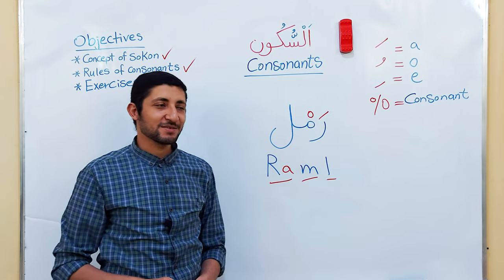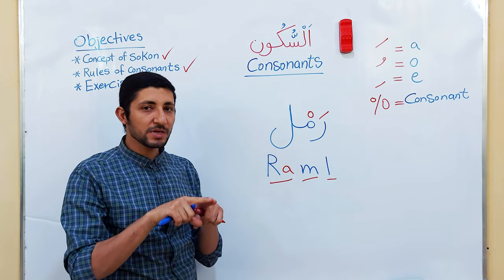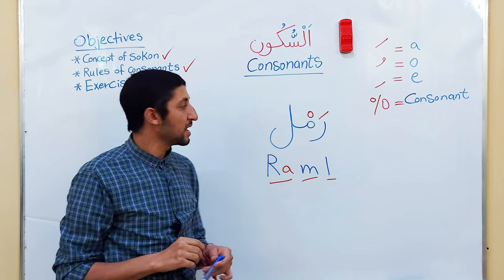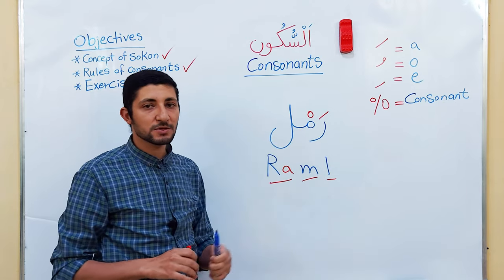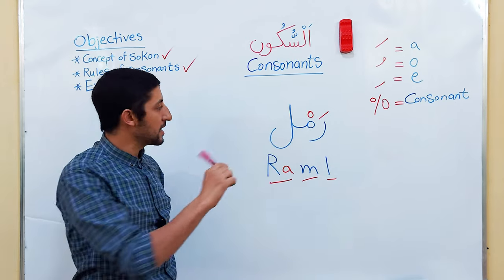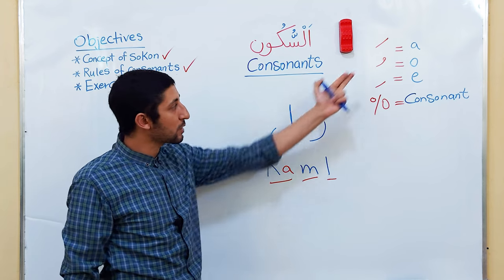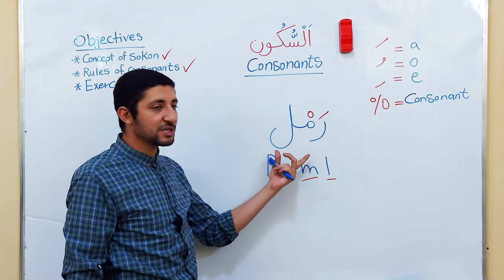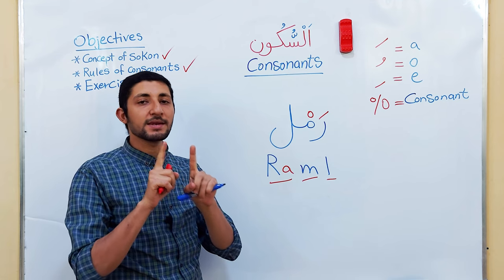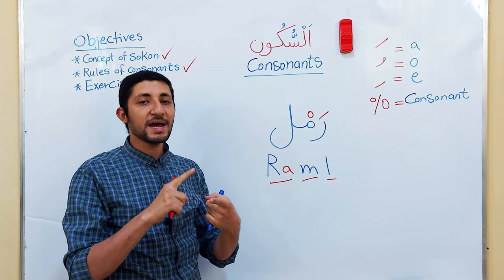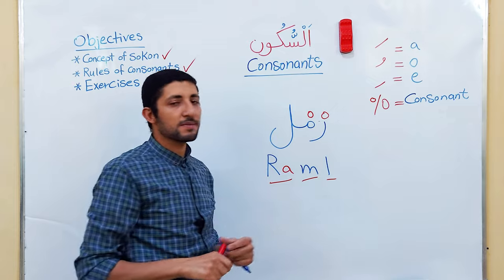A student might ask: you said two consonant sounds cannot be adjacent, but we see two consonants here — M with Sukoon and L which we pronounced as consonant. The answer is: the M is originally consonant, but the L is not originally consonant — it is a vowel that will take a label in a sentence. What I mean is: two letters cannot both be originally consonant and adjacent to each other. That is what is not happening. The L here is only temporarily consonant because we are stopping.